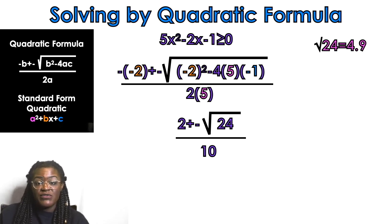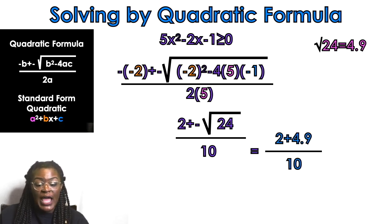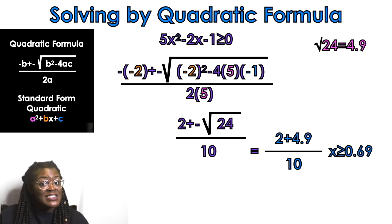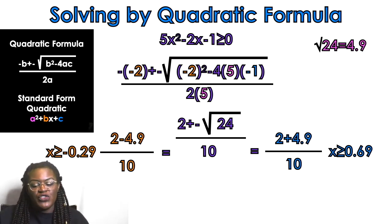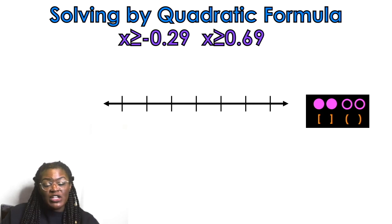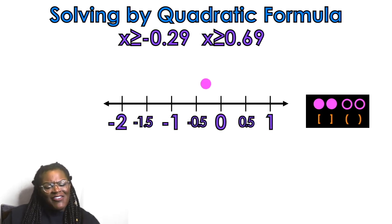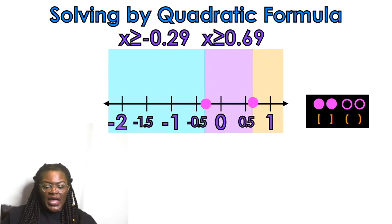Under the radical I get 24, so the square root of 24 is approximately 4.9. For the plus case: 2 plus 4.9 over 10 gives x greater than or equal to 0.69. For the minus case: 2 minus 4.9 over 10 gives x greater than or equal to negative 0.29. Because of the 'greater than or equal to' symbol, we use closed circles (or brackets) on the number line.